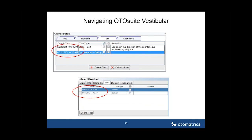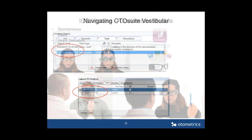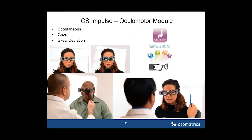Now let's talk about how to monitor changes with these patients. This is the ocular motor module available with the ICS Impulse. The three things we're going to discuss are spontaneous nystagmus, gaze, and skew deviation.